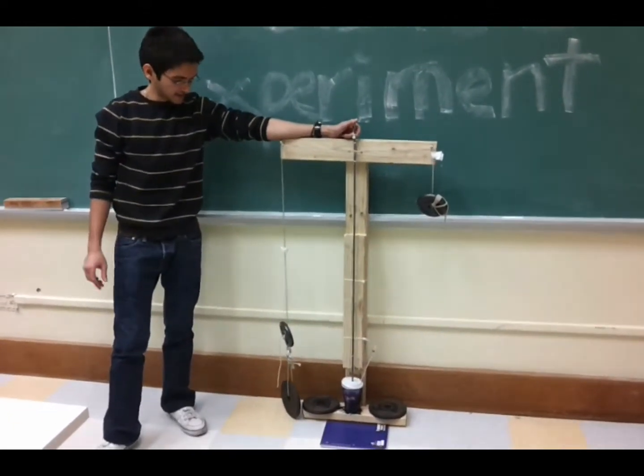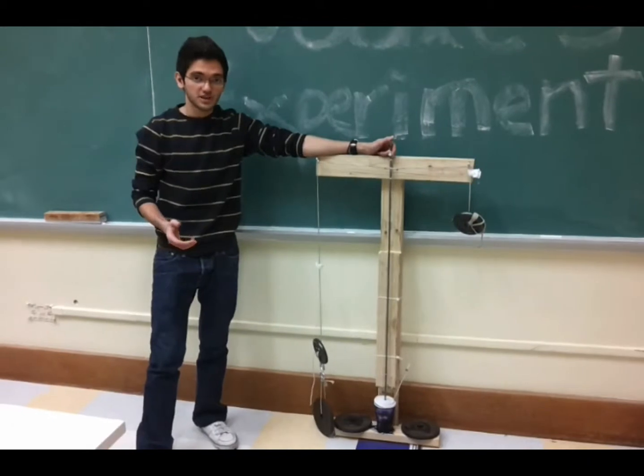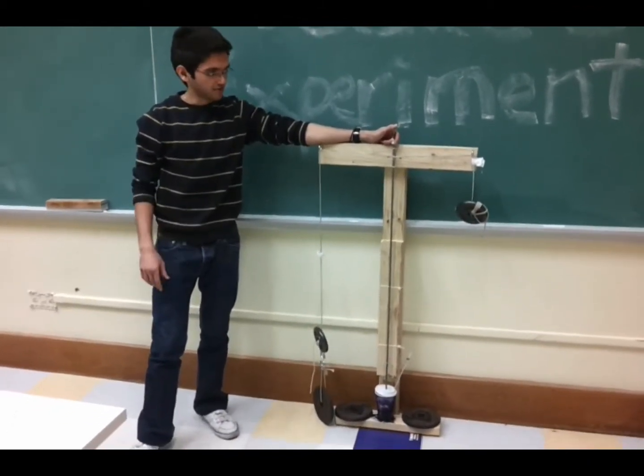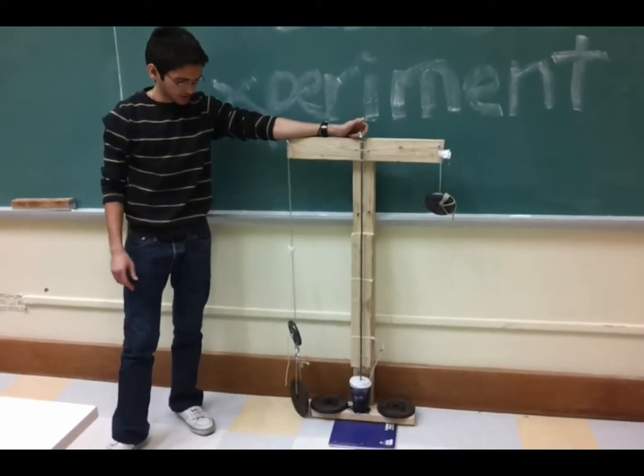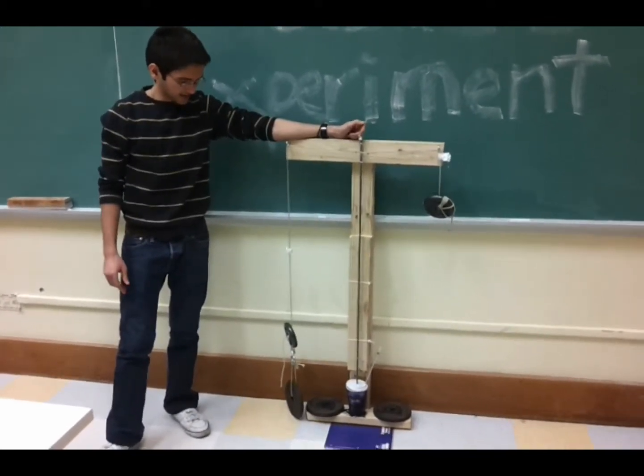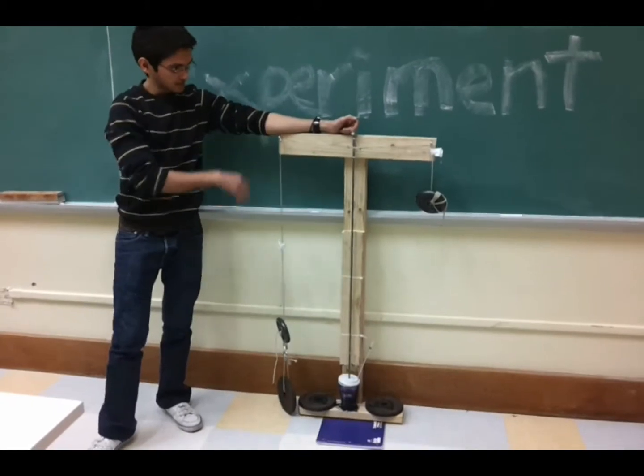So we actually ended up calculating what it should be, and it should be about 20.8 drops. But of course this is a highly inefficient system, and lots of energy is lost through friction and other such things, especially at the pulley systems.